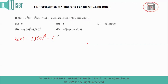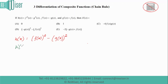g²(x) is the same as g(x) whole square. We are given that f'(x) equals minus g(x), and g'(x) equals f(x). We need to figure out what h'(x) is — h'(x) is nothing but the derivative of h(x).